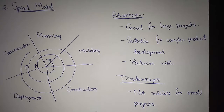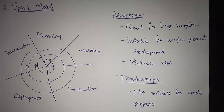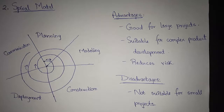In the initial path, we give the product specification regarding that particular project. In subsequent passes, we develop more sophisticated versions of software. Here we can make adjustments to the project planning according to requirements. Cost and schedule are adjusted based on customer feedback. The project manager adjusts the planned number of iterations required to complete the project. Unlike other methods, the spiral model is applied throughout the life of the computer software.